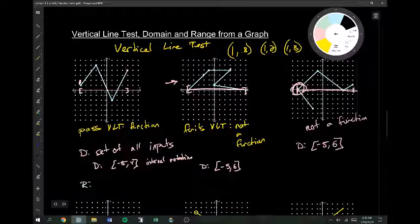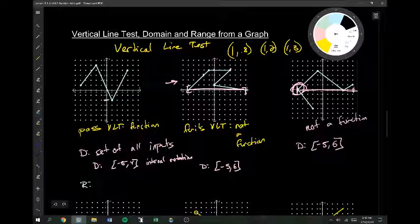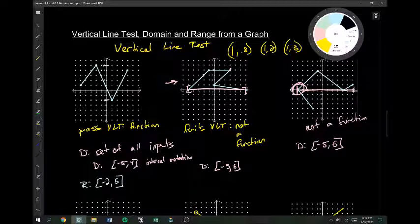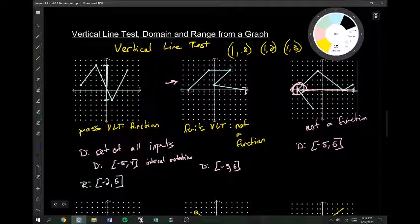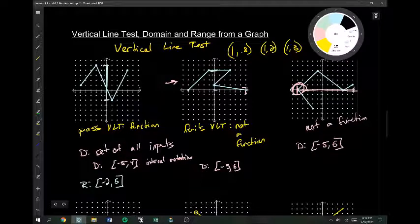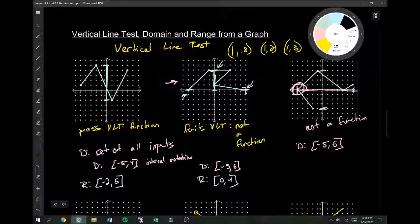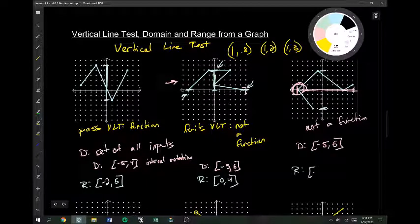I'm going to do the same thing. Think about what's the lowest and highest y values that appear and it goes from negative 2 to 5. This is a range from negative 2 to 5. This one has a range that goes from 0 to 4. So, the lowest y point was 0 right here and right here. And, the highest y point was 4. So, this has a range that goes from 0 to 4. And, this one, the lowest point is negative 4. The highest point is 4. This has a range that goes from negative 4 to 4.